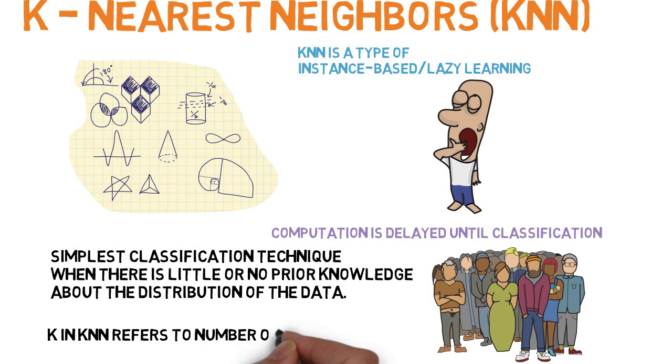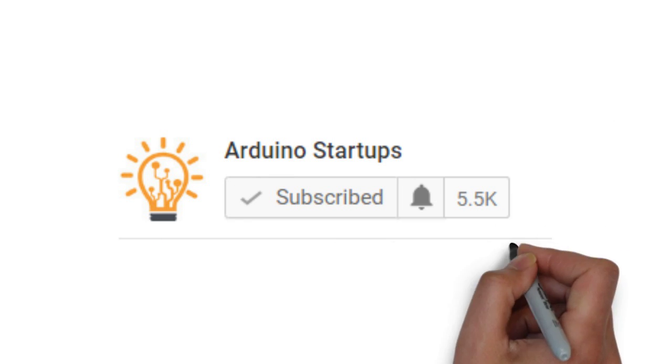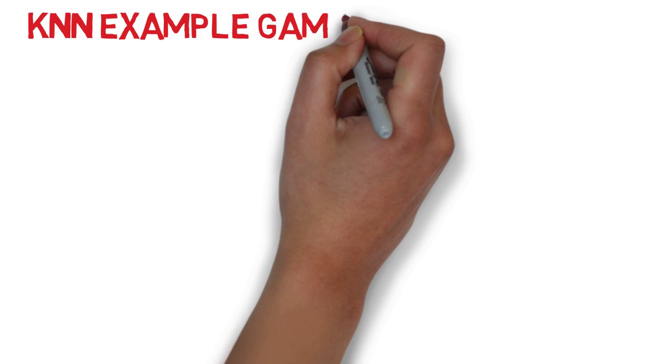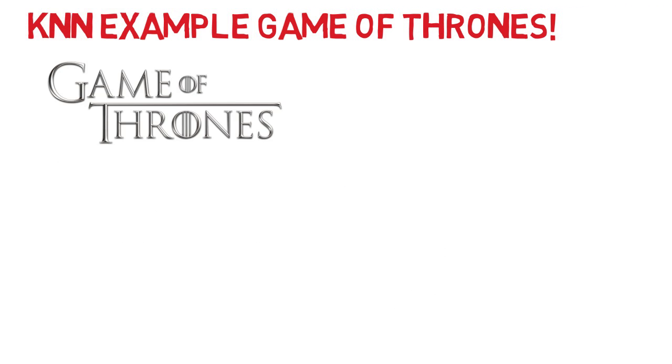The K in KNN refers to the number of nearest neighbors that the classifier will use to make its prediction. Let's take a look at how it works. To get a clear understanding of the KNN algorithm in action, let's look at a Game of Thrones example.